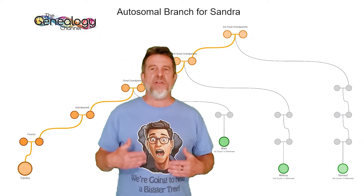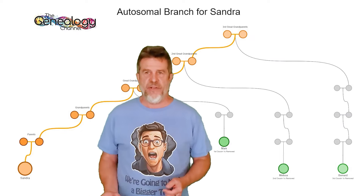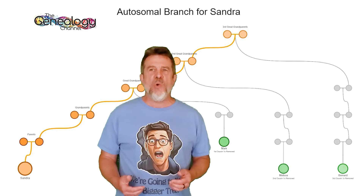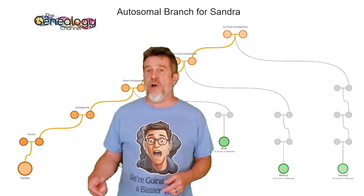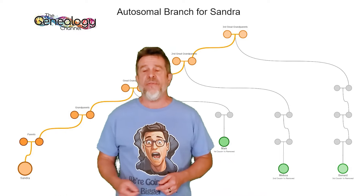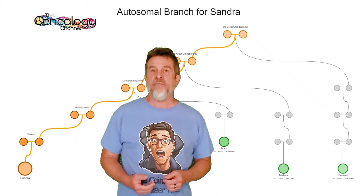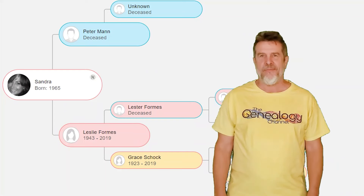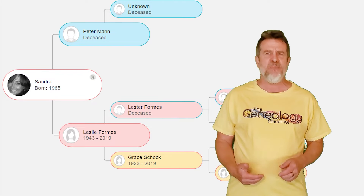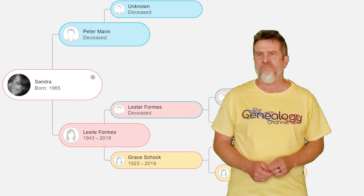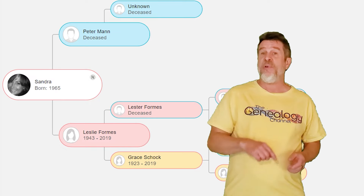If we follow Mark's line, his mother is Hazel, and Hazel's parents are Tom Ovens and Francis. Tom and Francis only had one daughter. Tom had a second daughter in 1927 with his second wife. Could daughter Jean be the key? Looking at Sandra's partial tree, could Jean be Peter Mann's mother? If so, she'd have to be about 15 or 16. There is another possibility.